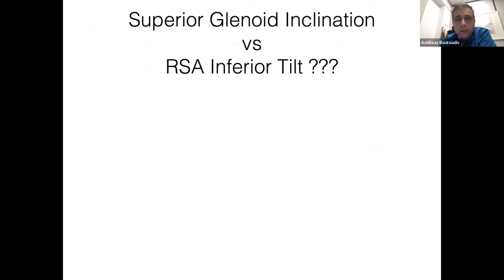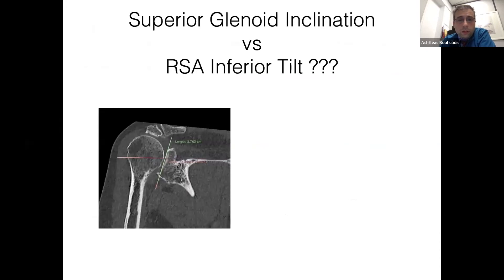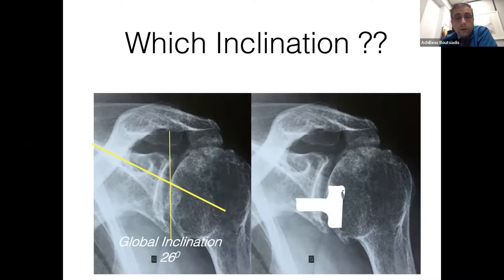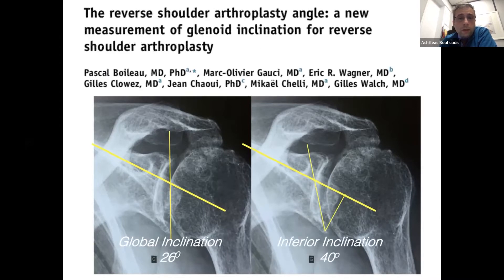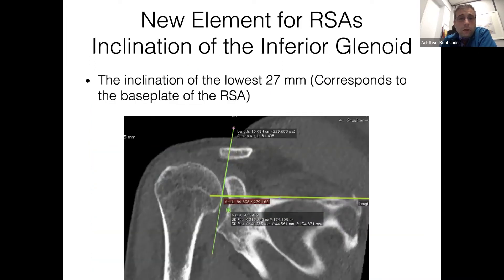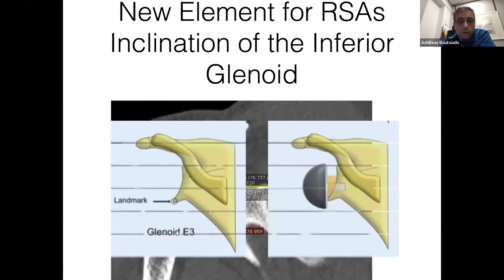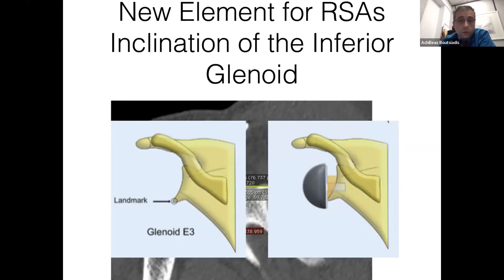The global inclination measured by the beta angle can be, for example, 26 degrees. However, the base plate is put at the lower part, and Pascal Boileau says that we have an inferior inclination called the RSA angle. This angle should be measured at the lowest 25 millimeters, corresponding to the base plate of the reverse shoulder arthroplasty. To avoid placing it with excessive superior inclination, we need to correct it or place it with inferior tilt. In one case, we had 21 degrees of superior inclination of the lower third, requiring correction with bony offset posteriorly or a metal augment.